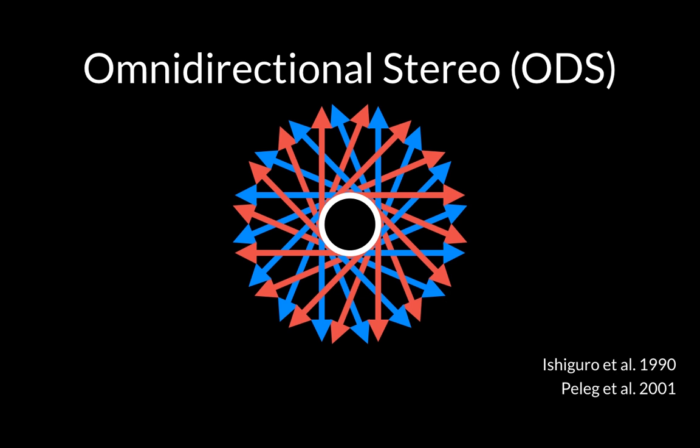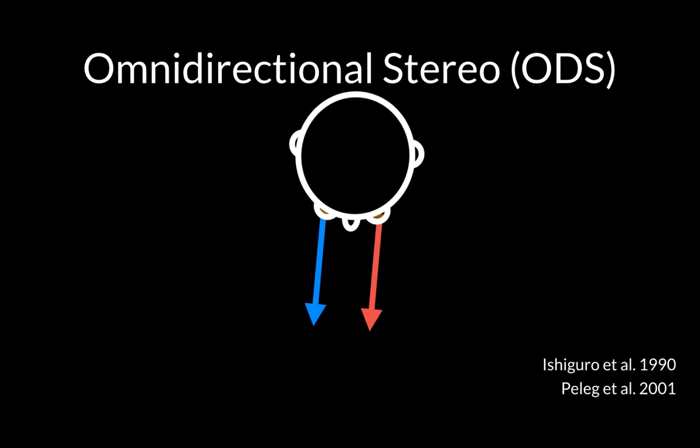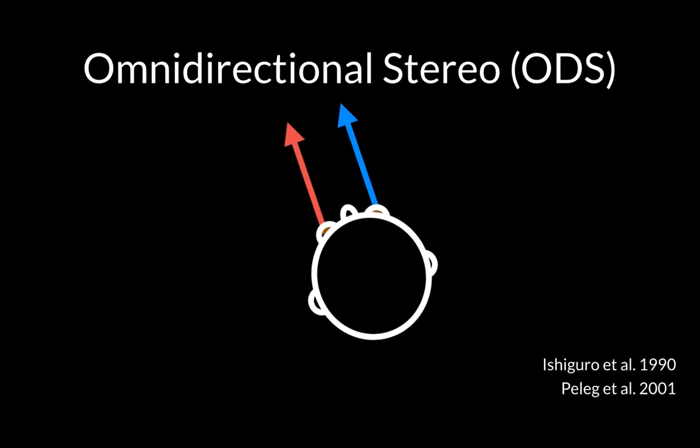In order to capture video which is both panoramic and stereoscopic, we use the omnidirectional stereo projection, or ODS. The ODS projection can be thought of as a mosaic of a pair of eyes looking in each direction at the horizon.